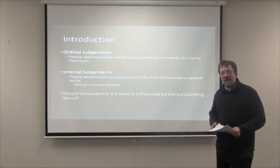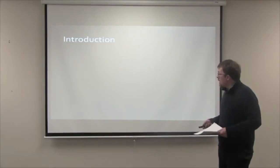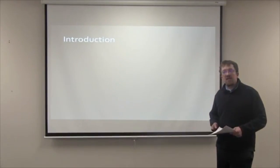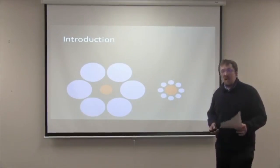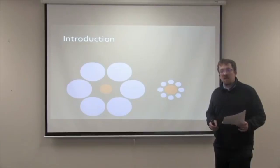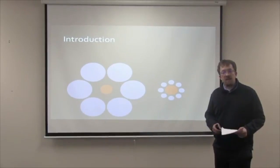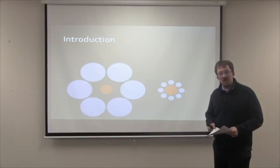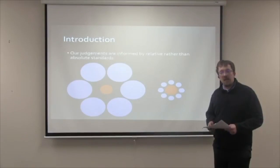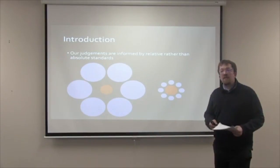Essentially, what this is saying is that people's evaluations are heavily influenced by surrounding stimuli. To further demonstrate this, we can look at a commonly used circle illusion within psychology. Despite the orange circles being the exact same size, the circle on the right looks much larger than the circle on the left. This is because we tend to judge the circles as being smaller when surrounded by larger circles. The takeaway is that our judgments are often informed by relative information, such as the surrounding circles, rather than absolute standards, such as the actual size of the orange circles.